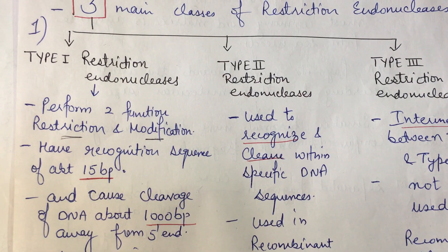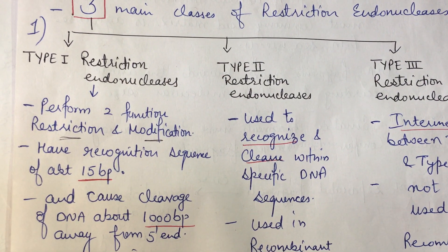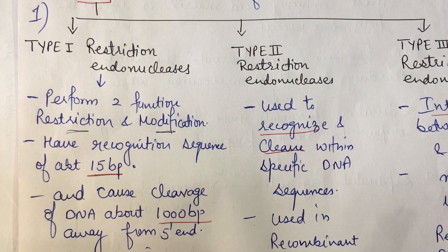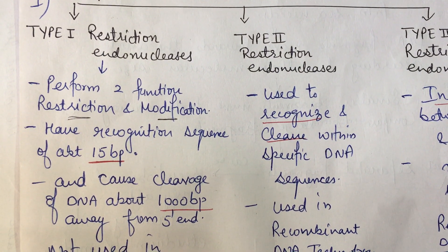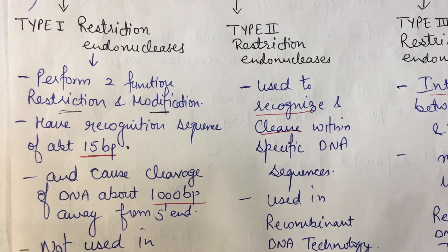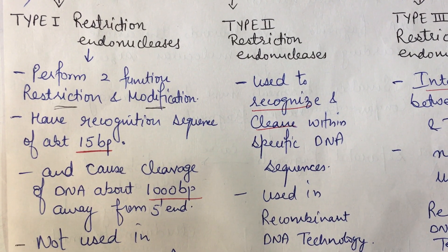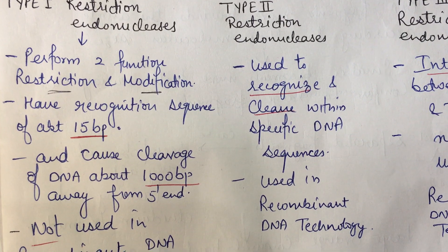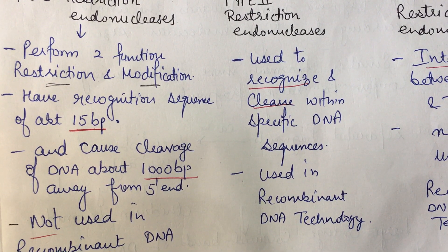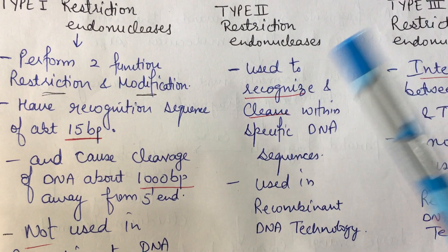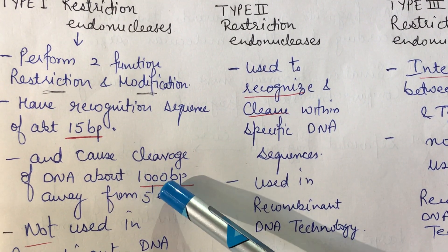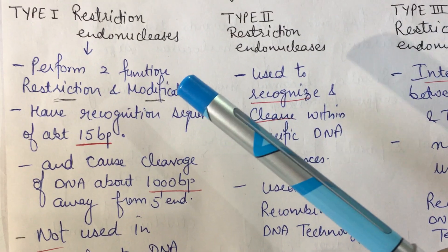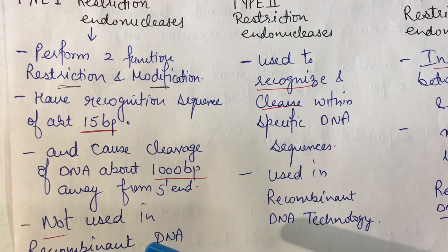Type 1 restriction endonuclease enzymes perform two functions: restriction and modification. In Type 1, the recognition sequence is about 15 base pairs. They cause cleavage of DNA about 1000 base pairs away from the recognition site. Because of this, Type 1 enzymes are not used in recombinant DNA technology.